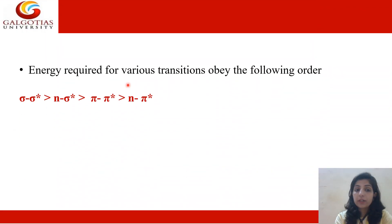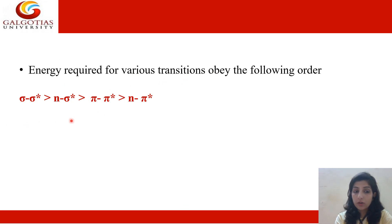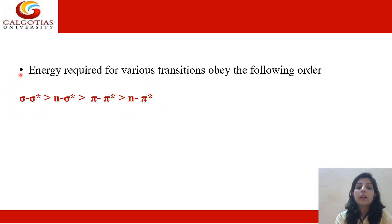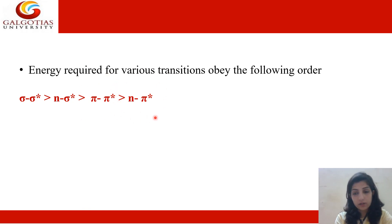This shows the energy required for various transitions, which obey the following order: sigma to sigma star transition requires the highest energy, followed by n to sigma star transition, then pi to pi star transition, and finally n to pi star transition, which requires the least energy.